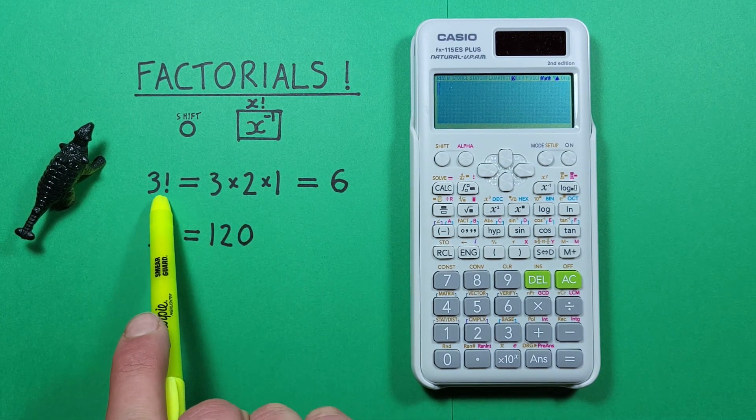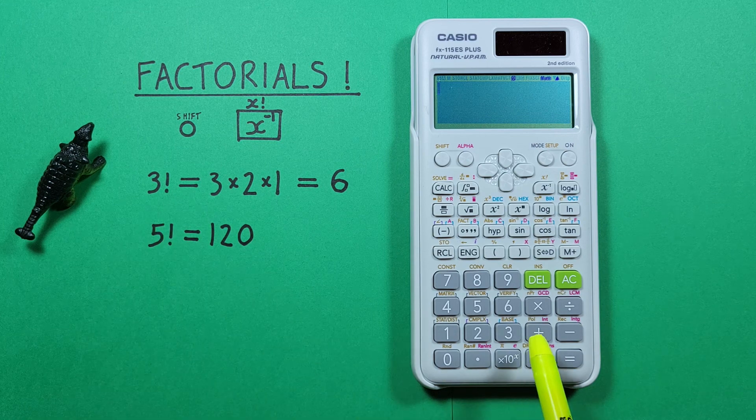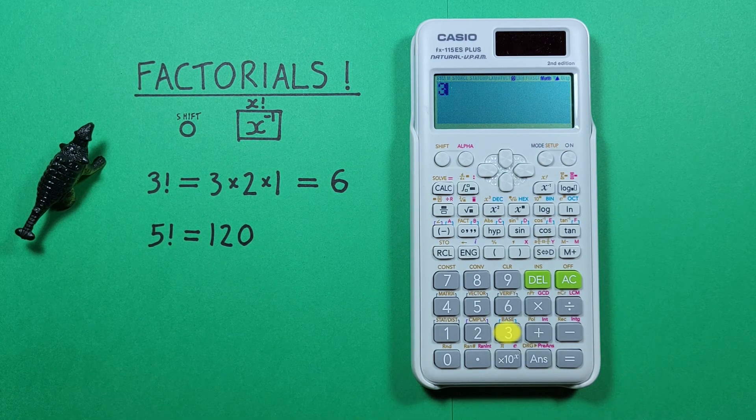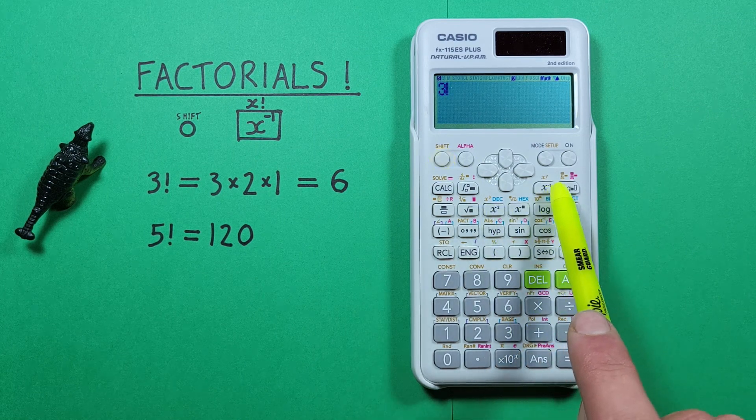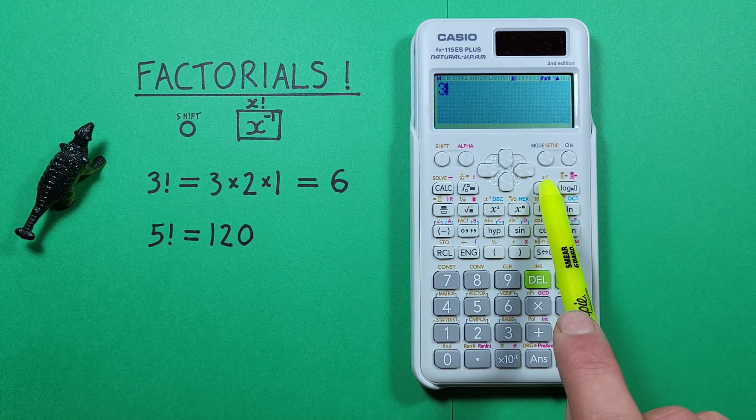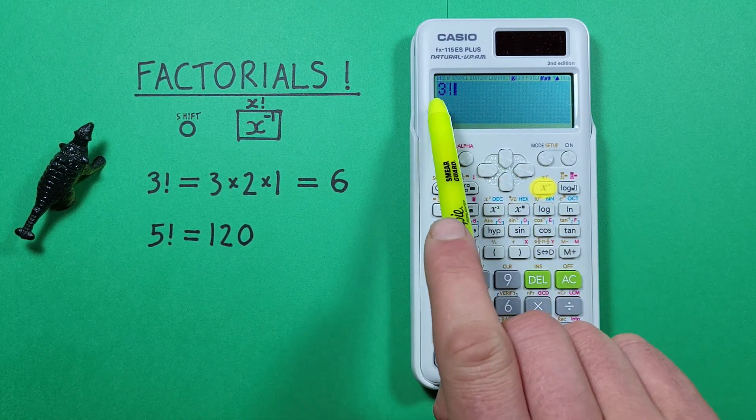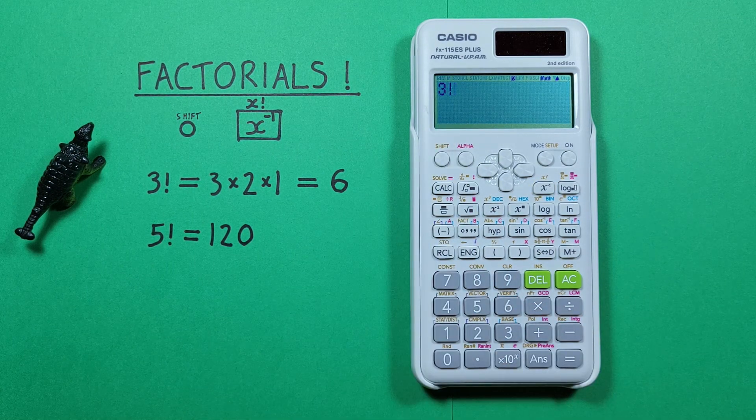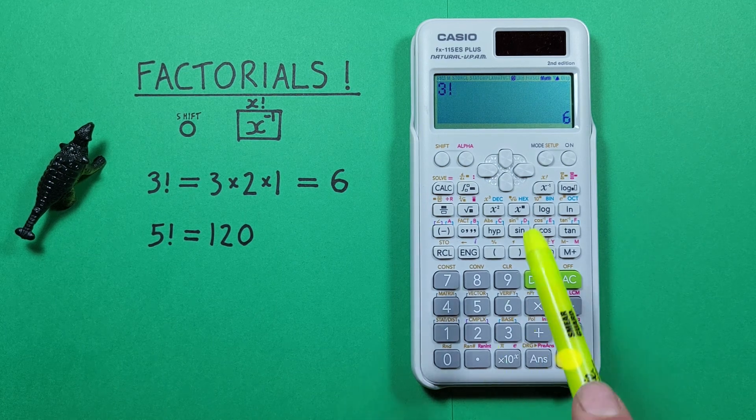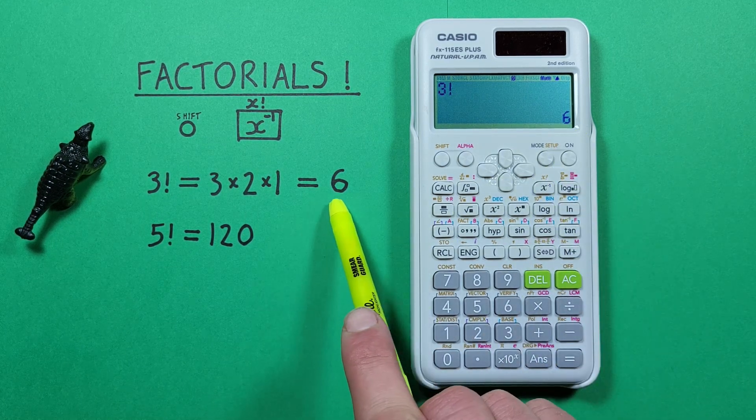So if we want to get 3 factorial what we do is enter the 3 and then press shift and then the inverse key with the shift function of factorial. There we see the exclamation mark which represents the factorial and if we press equals we see we get a result of 6 which we know is correct.